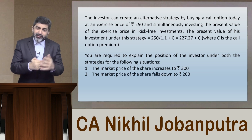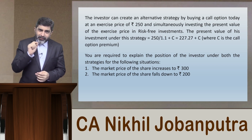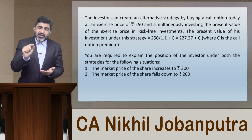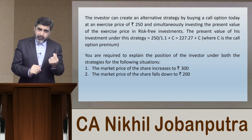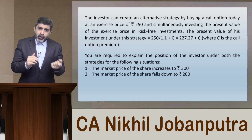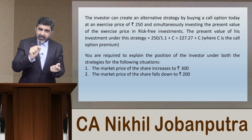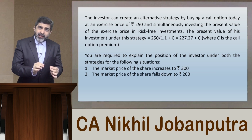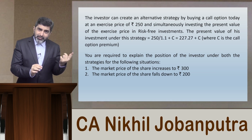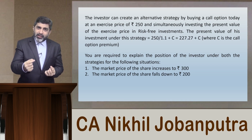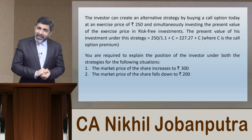What about the alternate strategy? If the investor is considering this alternate strategy, the risk-free rate of interest is 10% per annum. If there is a one-year call option, what you do is find the present value of the exercise price. This logic was discussed with the portfolio replication model, which we are going to cover in lecture 8A.